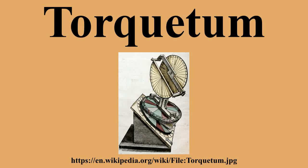This carried out the same task as the Torquetum, but was calibrated with linear scales read by plumb lines. This simplified the spherical trigonometry by resolving the polar measurements directly into Cartesian components.